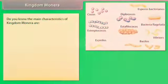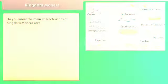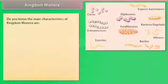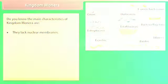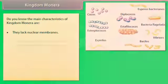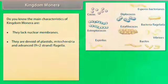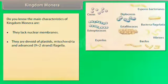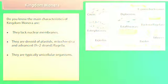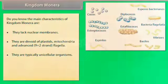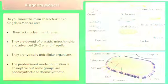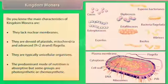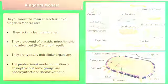The main characteristics of Kingdom Monera are that they lack nuclear membranes; they are devoid of plastids, mitochondria, and advanced 9 plus 2 strand flagella. They are typically unicellular organisms. The predominant mode of nutrition is absorptive, but some groups are photosynthetic or chemosynthetic.